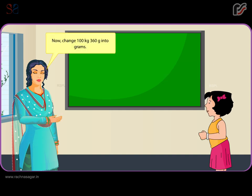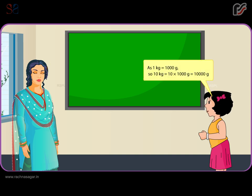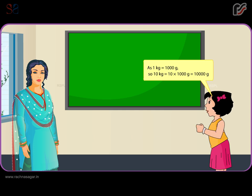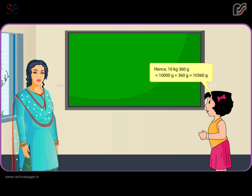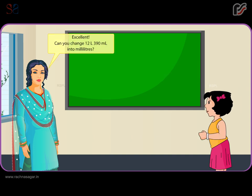Now, change 10 kilograms 360 grams into grams. As 1 kg is equal to 1,000 grams, so 10 kg is equal to 10 × 1,000 = 10,000 grams. Hence, 10 kilograms 360 grams = 10,000 grams + 360 grams = 10,360 grams.